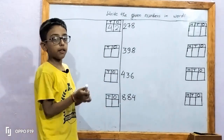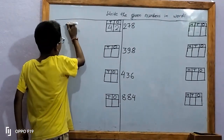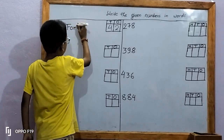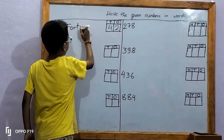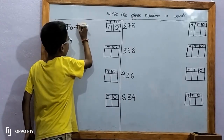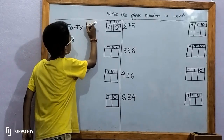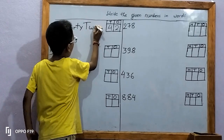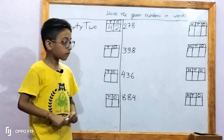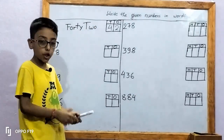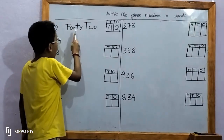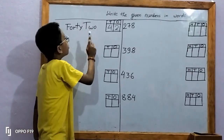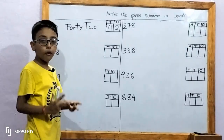Let's write in words. F-O-R-T-Y, forty. T-W-O, two. Forty-two. Let's spell forty-two: F-O-R-T-Y, forty, T-W-O, two. Forty-two.